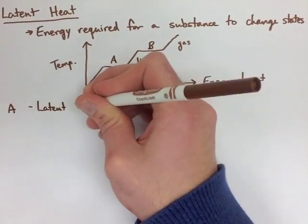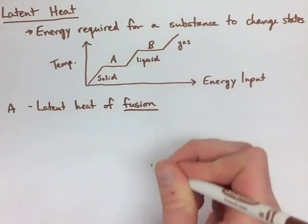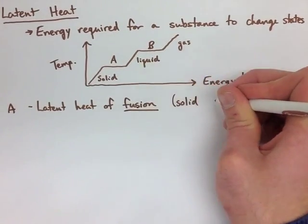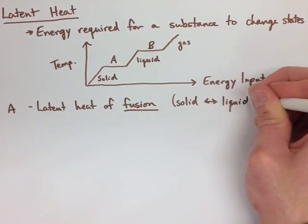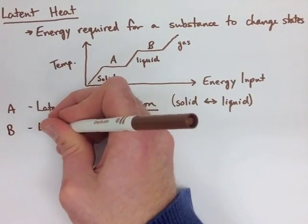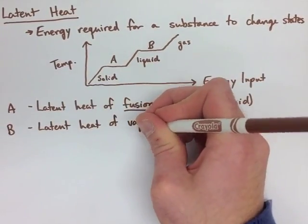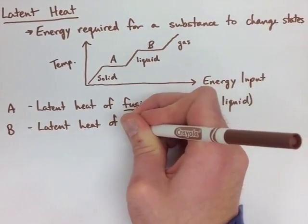A is the latent heat of fusion. This is where we go from a solid to a liquid. And B is the latent heat of vaporization, where we go from a liquid to a gas.